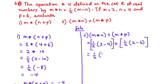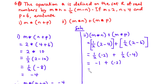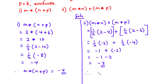Let's simplify. We have 1 over 2 times (2 minus 4), which is negative 2, and (2 minus 6) is negative 4. Half times negative 2 is negative 1, and half of negative 4 is negative 2. Therefore we have negative 1 plus negative 2, which equals negative 3. So (m star n) plus (m star p) equals negative 3.